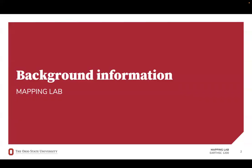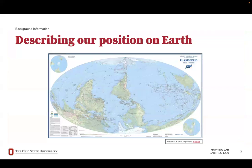First, we'll start with some background information to provide you context for this week's lab. A map is a flat representation of Earth's surface as viewed from above. Maps serve as a visual representation of Earth's surface and come in several types, each designed to convey specific kinds of information. Our choice of how and what to display on a map can significantly influence our perception of the world, shaping our understanding of geography and spatial correlation.